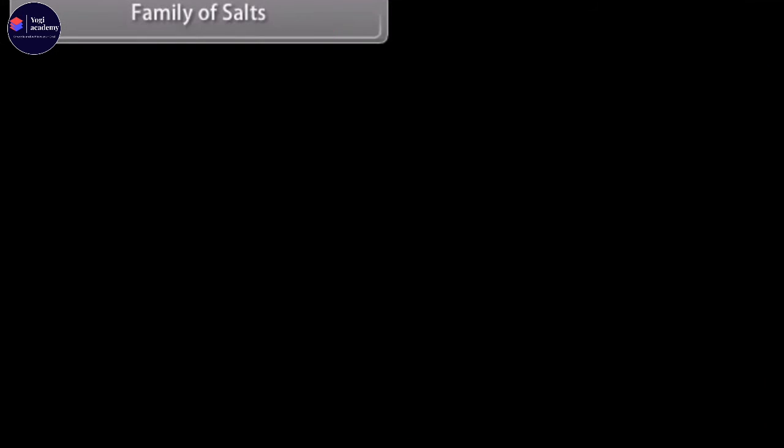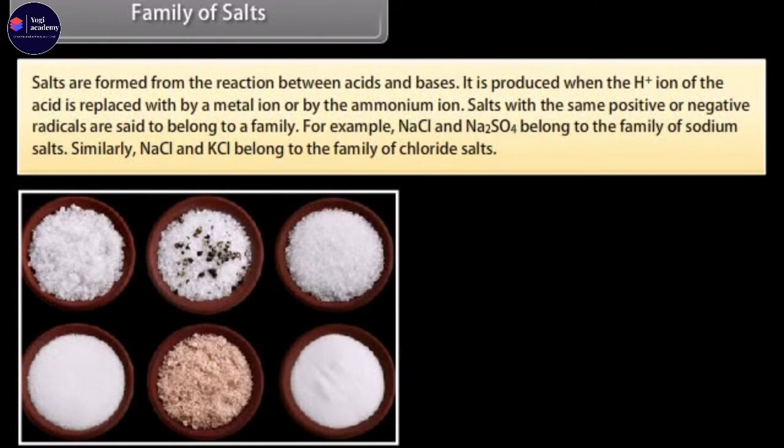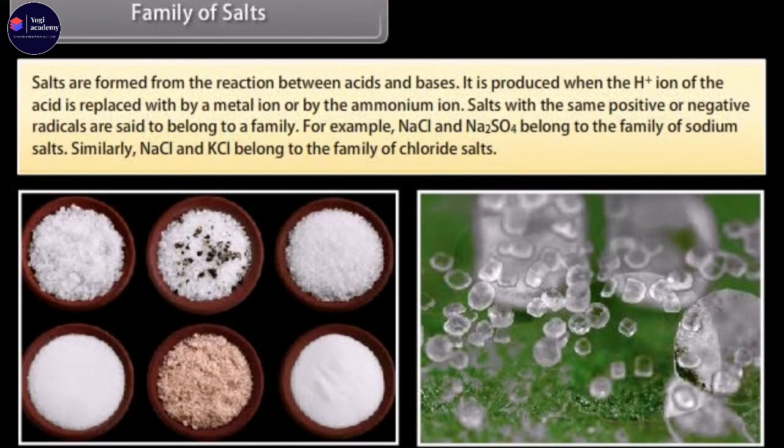Salts are formed from the reaction between acids and bases. It is produced when the H ion of the acid is replaced by a metal ion or by the aluminum ion or by the ammonium ion. Salts with the same positive or negative radicals are said to belong to a family. For example, NaCl and Na2SO4 belong to the family of sodium salts. Similarly, NaCl and KCl belong to the family of chloride salts.